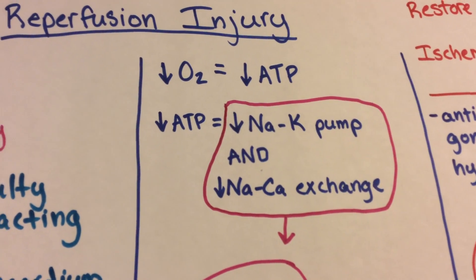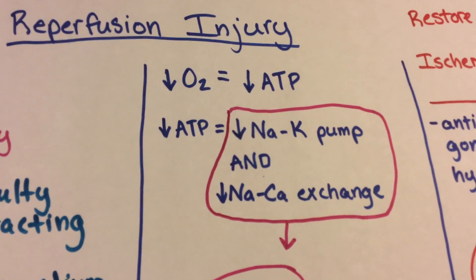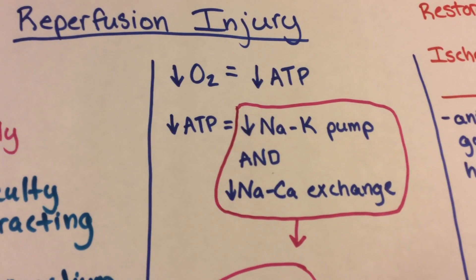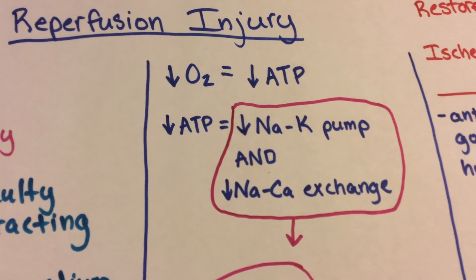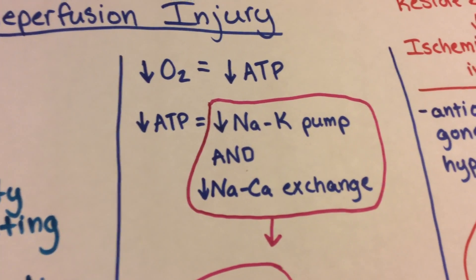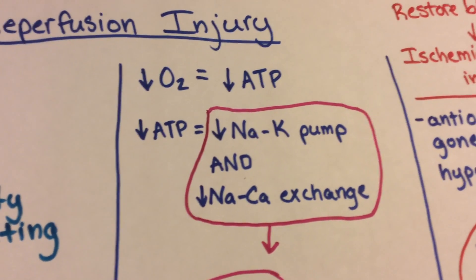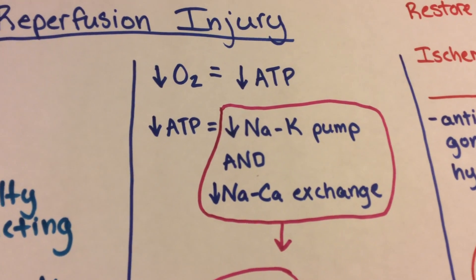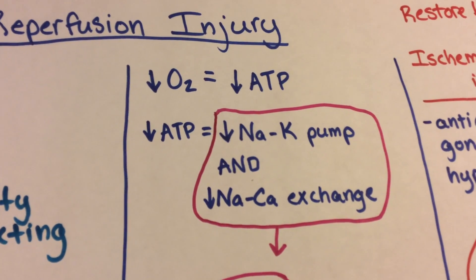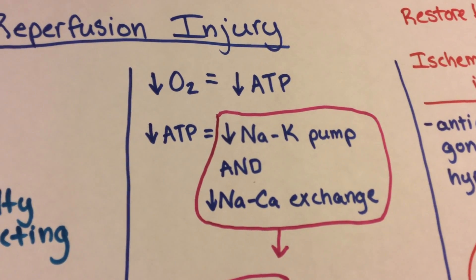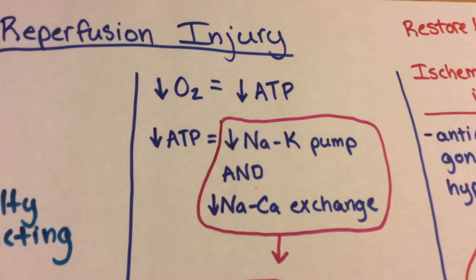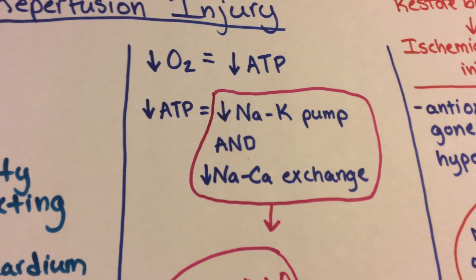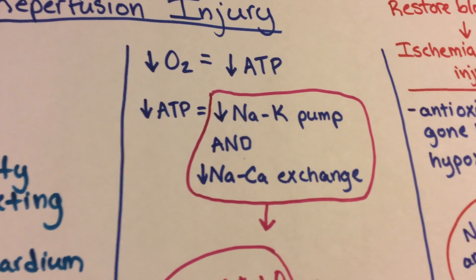Now if we don't have enough oxygen and we can't use oxygen for respiration, what does the cell do? It can use anaerobic respiration, but that's pretty inefficient and you don't get as much ATP — maybe only two ATPs. So without oxygen you don't have enough ATP to run the sodium-potassium pump.